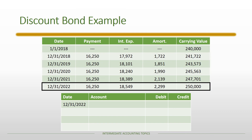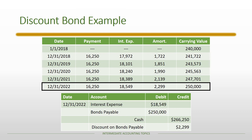At maturity, the final entry is a little different because we must record not only the last interest payment but also repayment of the par value. Bonds payable is debited. The cash payment is $16,250 (interest) plus $250,000 (par value) for a total of $266,250. The amortization of the discount is $2,299, giving a final interest expense of $18,549.